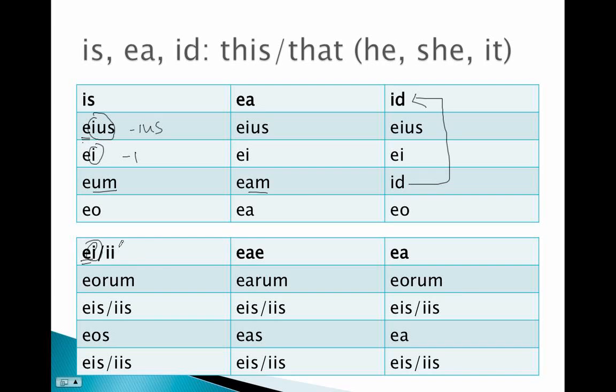Now, sometimes what can happen is if the ending begins in i, or is i, as is the case here, that initial e will assimilate to the i. So ei or ii becomes ei, ei, ea.